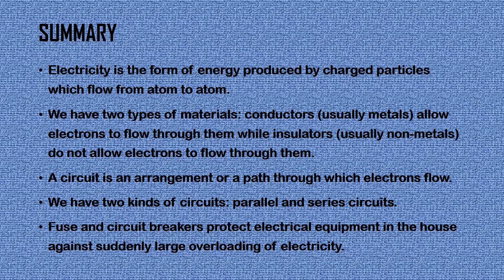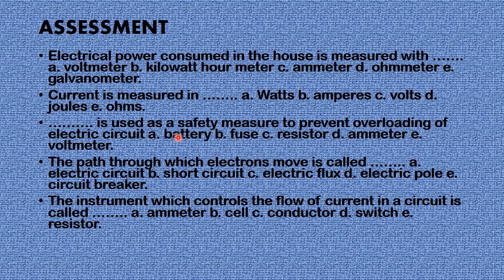We have come to the end of this lesson on electrical energy. In summary: electricity is the form of energy produced by charged particles which flow from atom to atom. Conductors (usually metals) allow electrons to flow through them, while insulators (usually nonmetals) do not. A circuit is an arrangement or path through which electrons flow, and there are two kinds: series and parallel circuits. Fuses and circuit breakers protect electrical equipment against overloading.